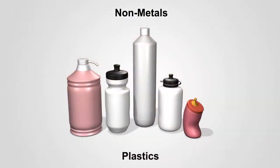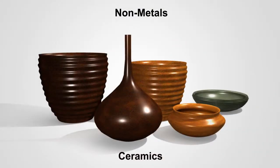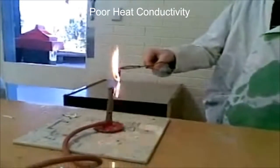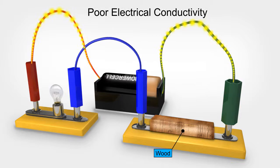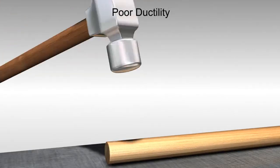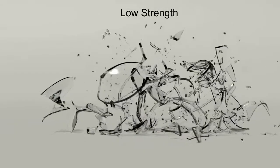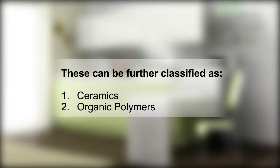Compared to metals, non-metals are light in weight, possess poor heat and electrical conductivity, poor ductility, and low strength. These can be further classified as ceramics and organic polymers.